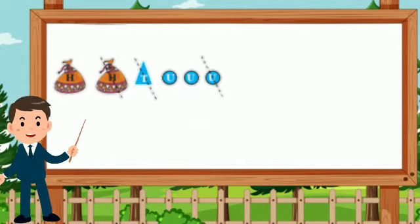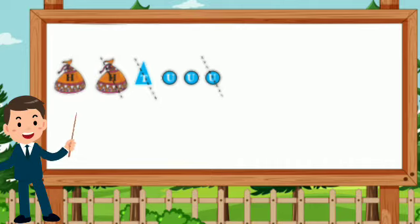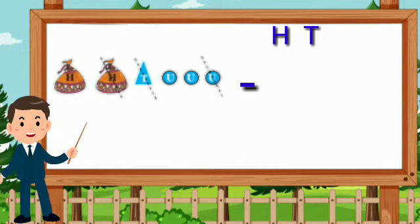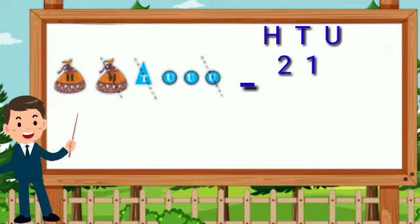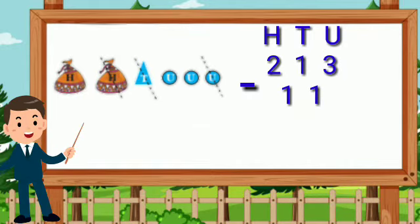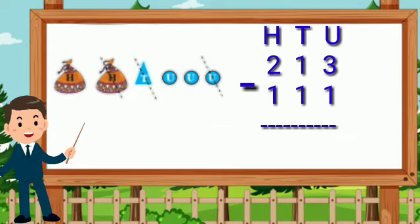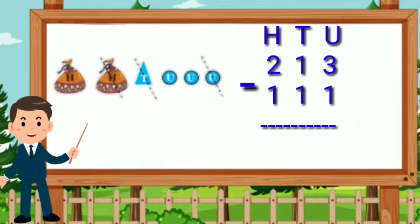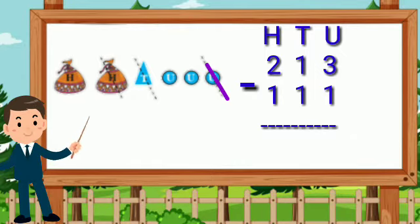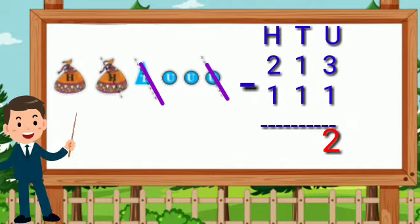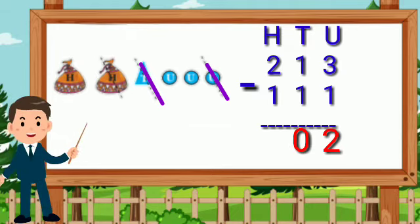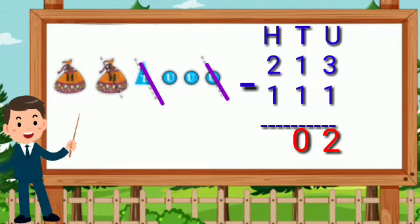Look at the picture and see how to solve the example. Here are two purses of hundred beads, one string of tens, and three single beads. Let us subtract. First subtract the units from the units: 3 minus 1 equals 2. Then subtract the tens from tens: 1 minus 1 is equal to 0. Last, the hundreds from the hundreds: 2 minus 1 is equal to 1. So 213 minus 111 is equal to 102.